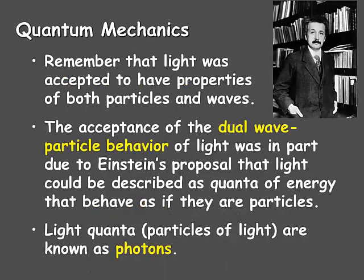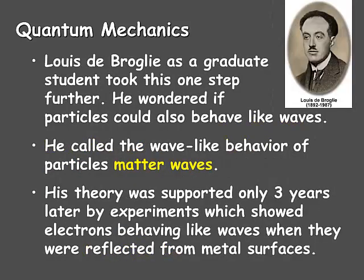Remember that light was accepted to have properties of both particles and waves. The acceptance of the dual wave-particle behavior of light was in part due to Einstein's proposal that light could be described as quanta of energy that behave as if they are particles. Light quanta, which are particles of light, are known as photons. Louis de Broglie, as a graduate student, took this one step further and wondered if particles could also behave like waves. He called the wave-like behavior of particles matter waves, and his theory was supported only three years later by experiments showing electrons behaving like waves when reflected from metal surfaces.